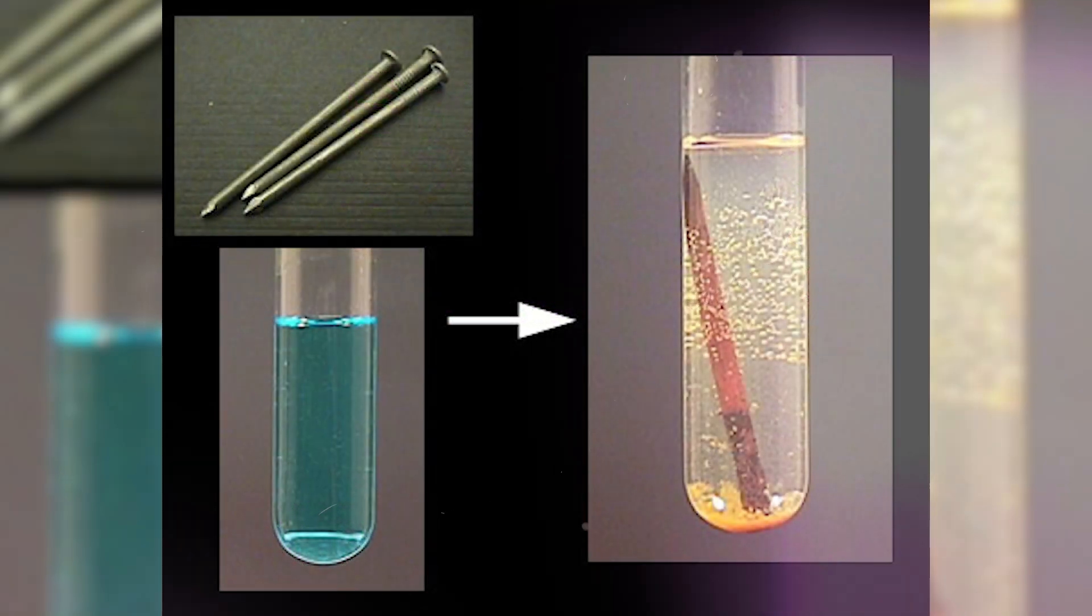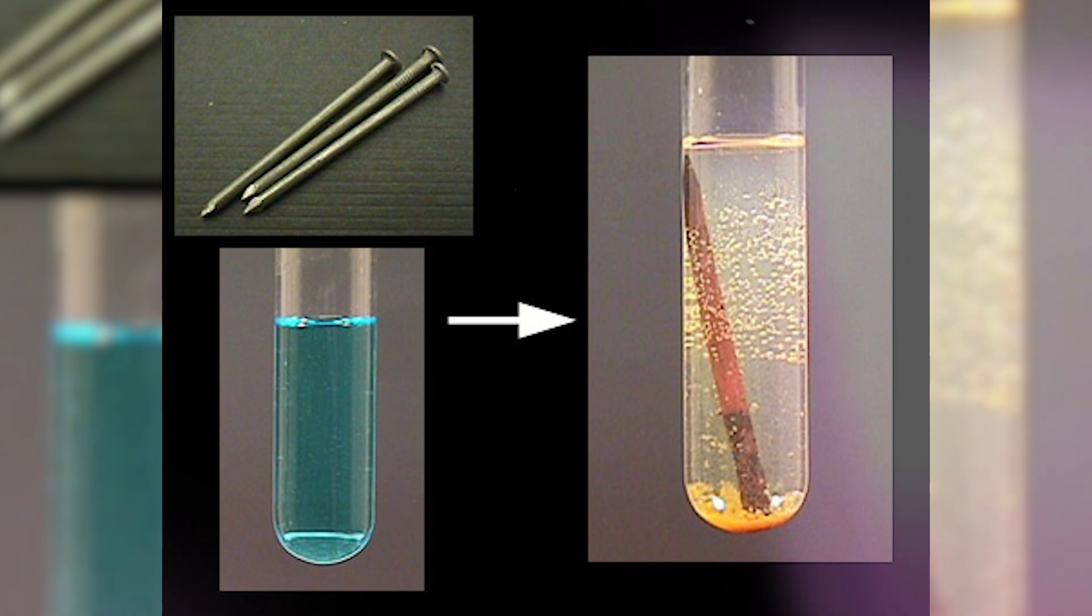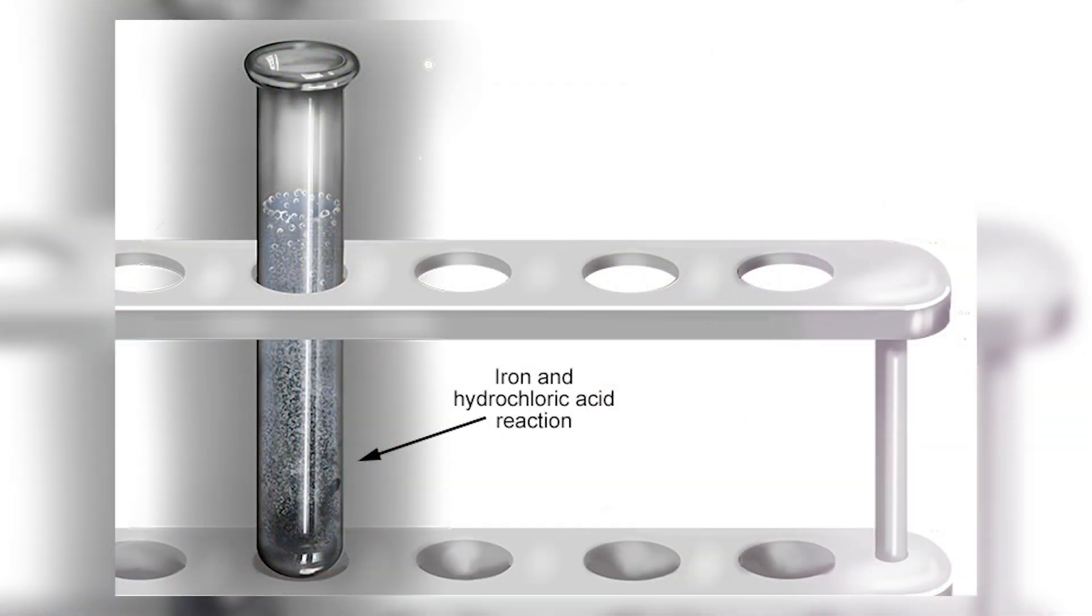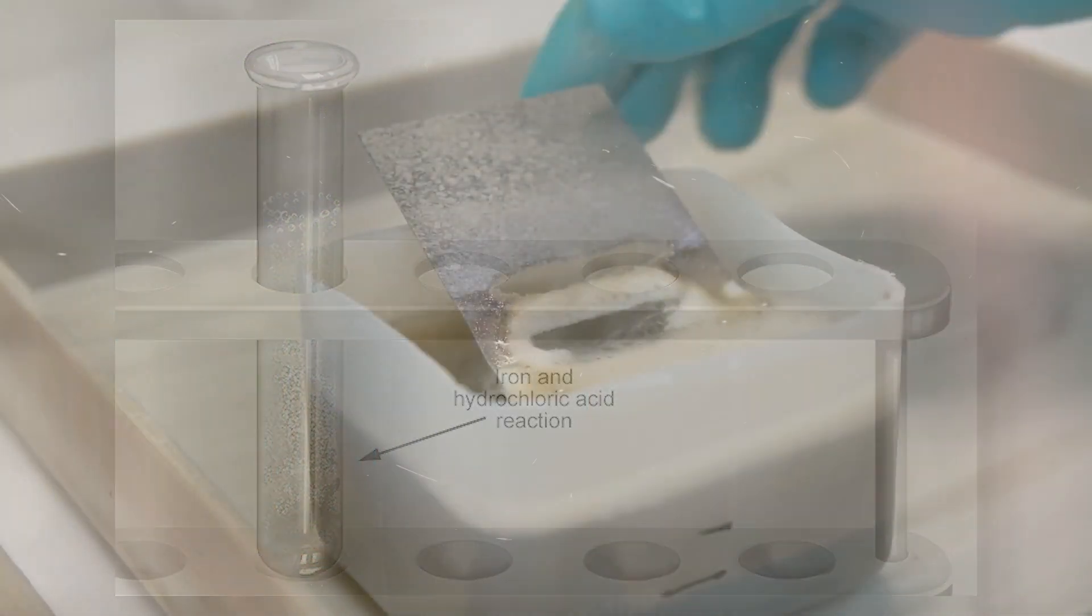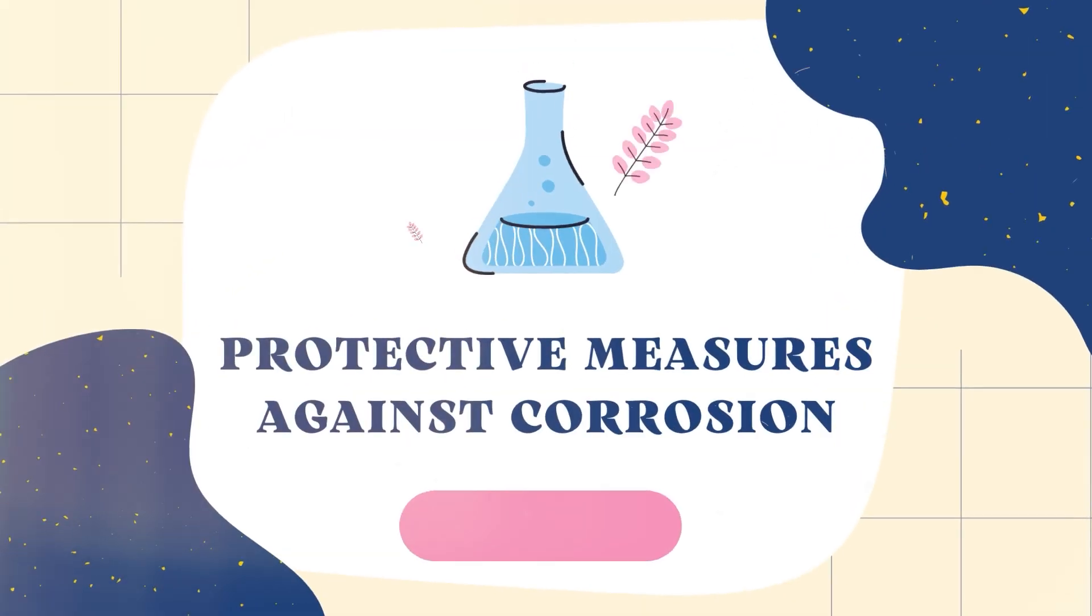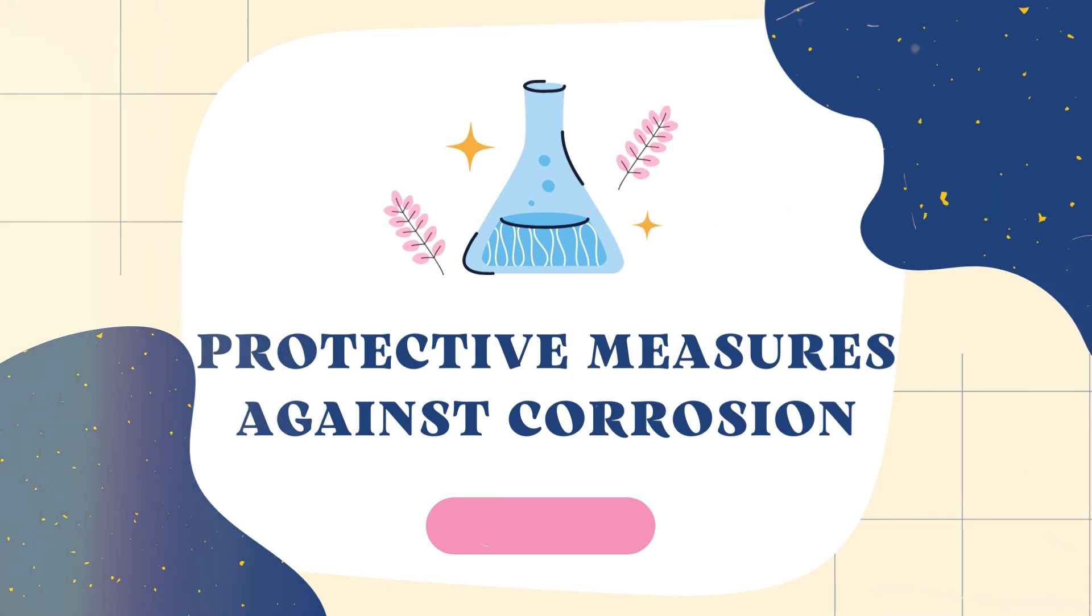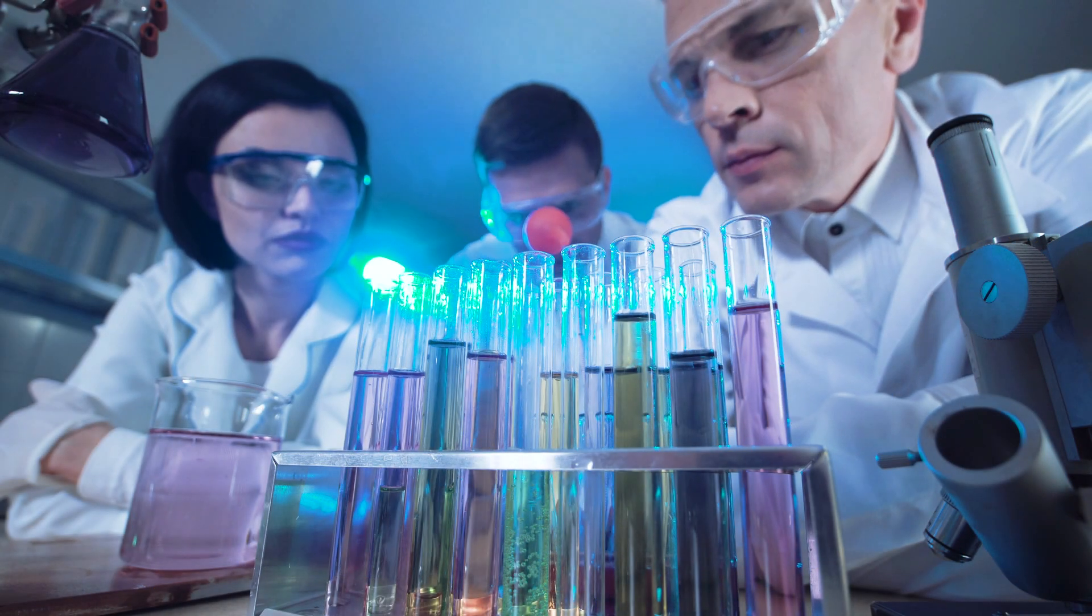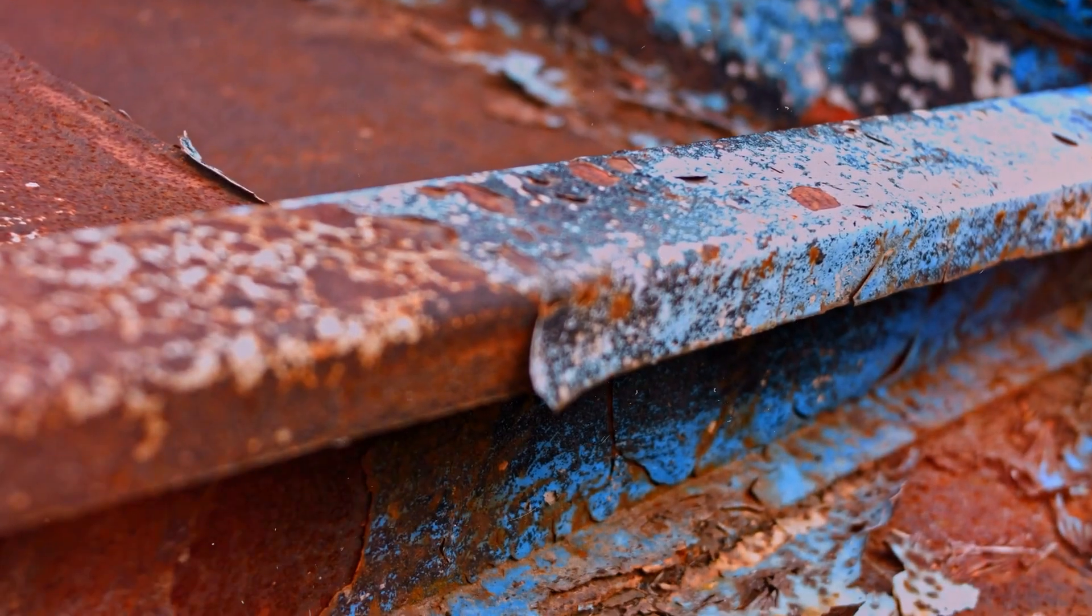As the acid continues to react with the steel, it gradually dissolves the metal, causing it to weaken and eventually melt away. This process can vary in speed depending on the strength of the acid and the conditions of the reaction. So what can we do to protect steel from acid corrosion and extend its lifespan?